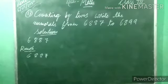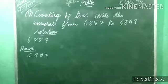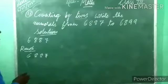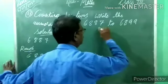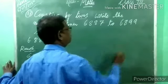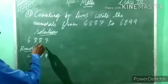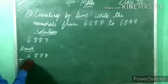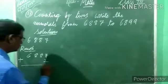Now, the 13th question. What is given? Counting by 2s — write the numerals from 6,887 to 6,899. Counting by 2s is given. Write the numerals from this starting number up to 6,899 where we have to end. Counting by what is given? 2. So we have to add 2. Counting by 10 means add 10, 100 means add 100, 1000 means add 1000 — according to the question.